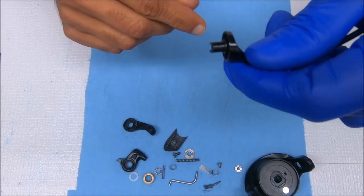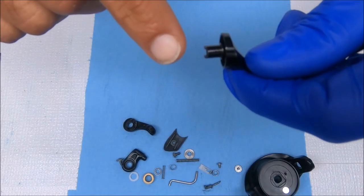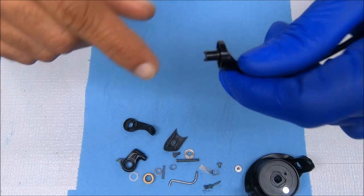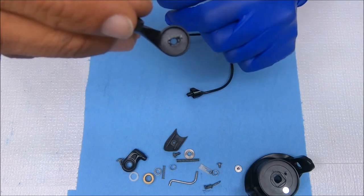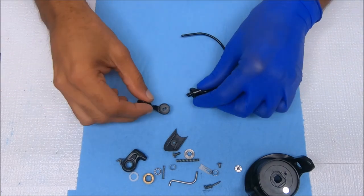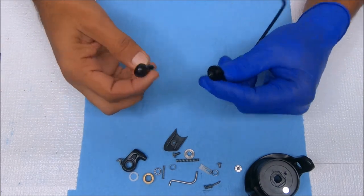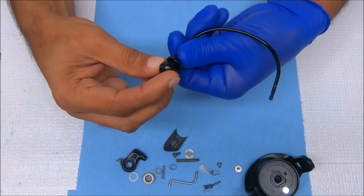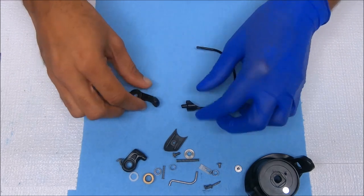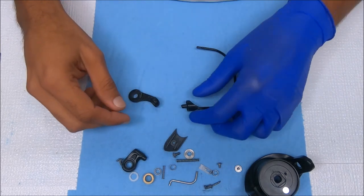For the bail wire, you'll notice there are some prongs on the end. Those prongs correspond to this portion inside the bail arm. So when we put this back together, we want to make sure that those things get set in place.